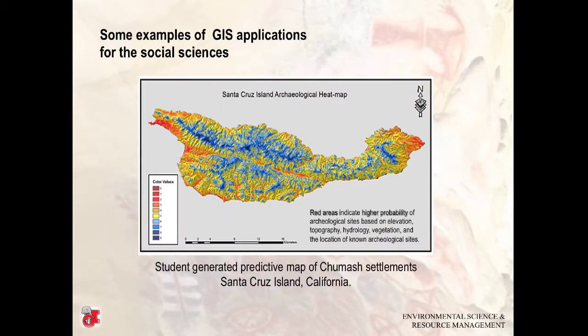In this case, a student used a similar process using elevation, topography, hydrology, vegetation, and the location of previously known archaeological sites to create a predictive map of Chumash settlements on Santa Cruz Island, California.